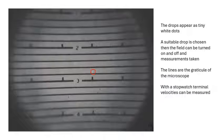There's a graticule on the microscope so that as they fall, using a stopwatch you can measure their velocity. The drops appear as tiny little white dots. You choose a suitable drop and then you can turn the field on and off and take measurements of its terminal velocity when it's falling without the field on and its terminal velocity when it's rising with the field turned on. The lines are the graticule on the microscope, and then with a stopwatch you can time it and work out your velocities, your terminal velocities.